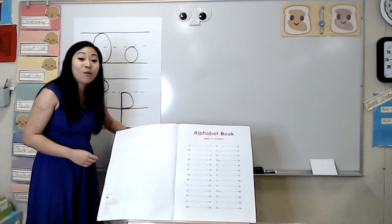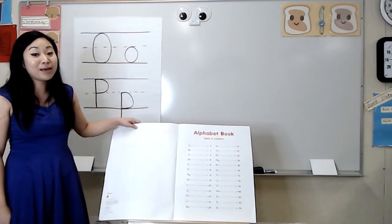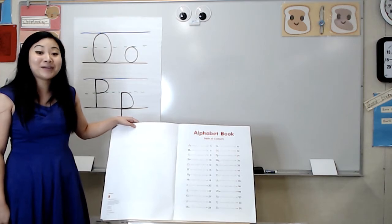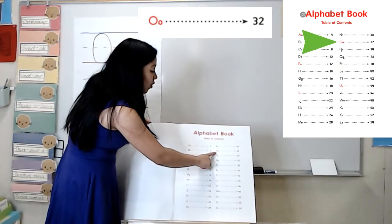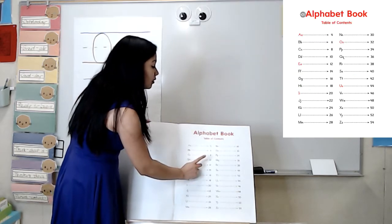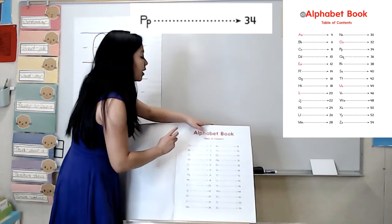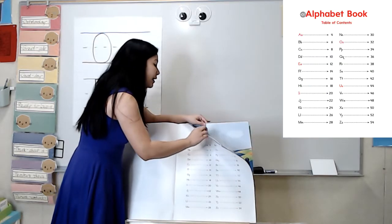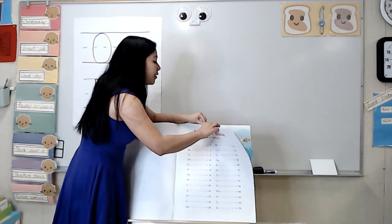Let's start with the poem for our letter O. And remember, we can check the table of contents to see where we can find them. I see that the letter O will be on page 32 and that the letter P will be on page 34. So I'm going to go ahead and turn to the poem for our letter O.